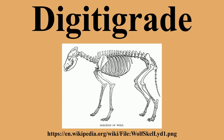Digitigrade locomotion is responsible for the distinctive hooked shape of dog legs. Ungulagrade animals, such as horses and cattle, walk only on the distal-most tips of their digits, while in digitigrade animals, more than one segment of the digit makes contact with the ground, either directly or via paw pads.